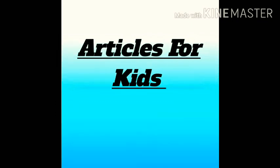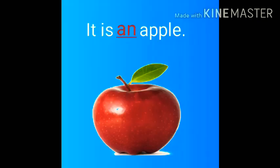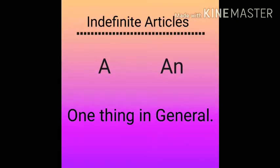Articles for Kids. It is a beautiful dress. It is an apple. A and AN are indefinite articles. We use them to talk about one thing in general.